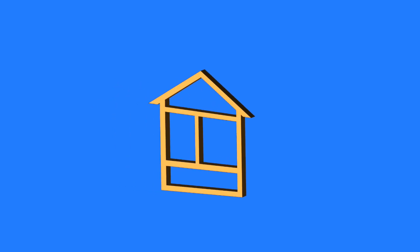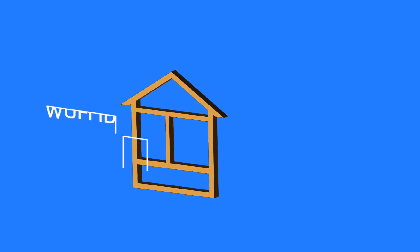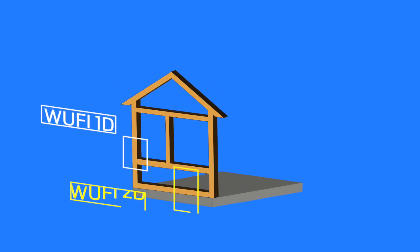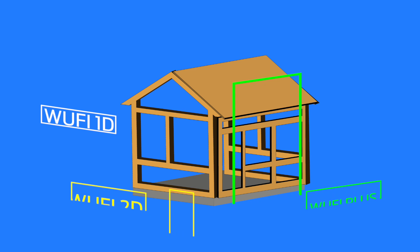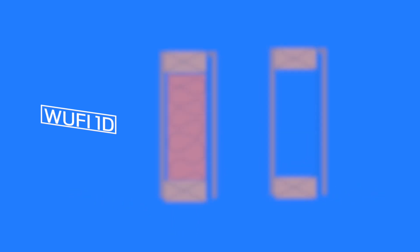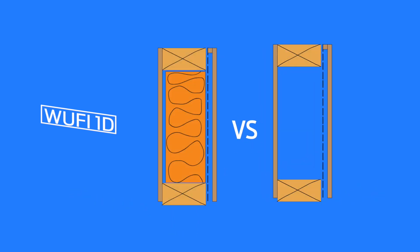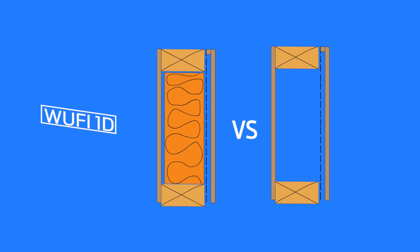For envelope simulations we mainly use the one and two dimensional versions of WUFI. If we are looking at whole of house we would tend to use WUFI Plus. The different versions of the software have varying strengths depending on what you are trying to model. For example, the 1D version tailors itself very well to large-scale parametric comparisons of different wall types, as it is very fast compared to the more comprehensive versions.